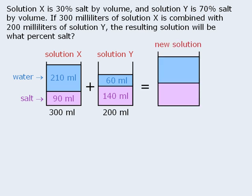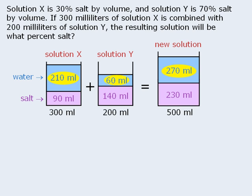Now when we combine these two solutions, we get a new solution, which we will draw with the salt and water separated. To determine the various volumes of this new solution, we will combine like parts. Since we are combining 300 milliliters of solution X and 200 milliliters of solution Y, the new solution will have a volume of 500 milliliters. Since solution X contains 90 milliliters of salt and solution Y contains 140 milliliters of salt, the new solution must have a total of 230 milliliters of salt. Since solution X has 210 milliliters of water and solution Y has 60 milliliters of water, the new solution must have a total of 270 milliliters of water.